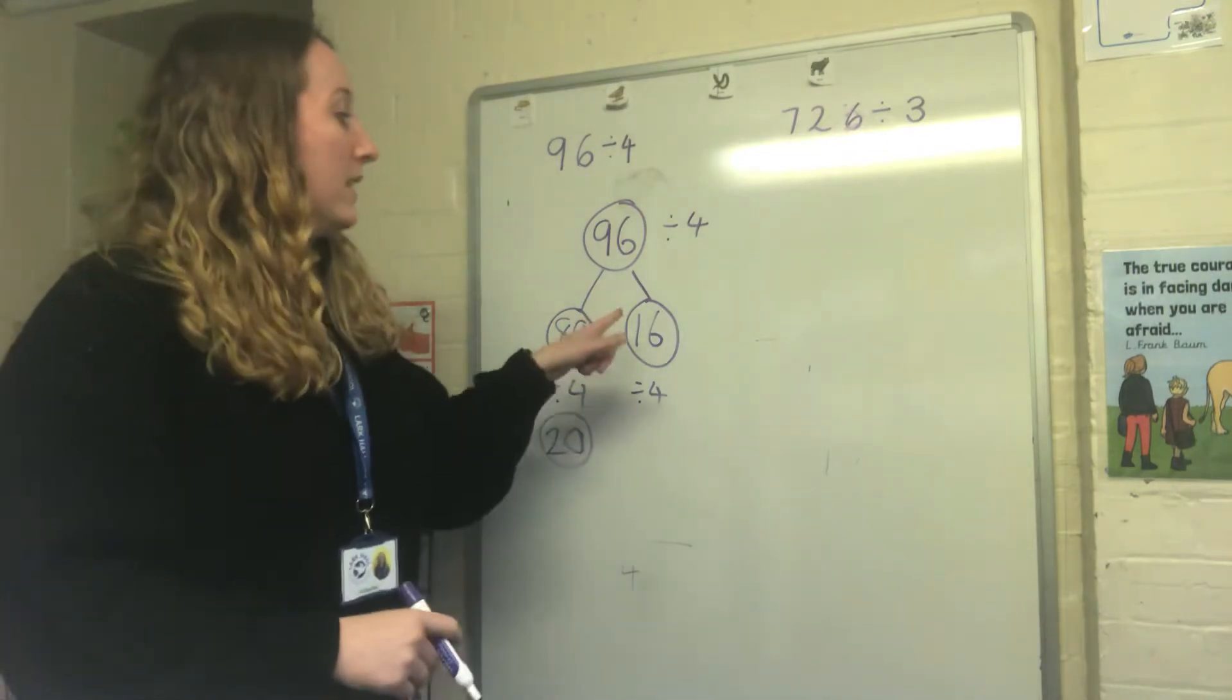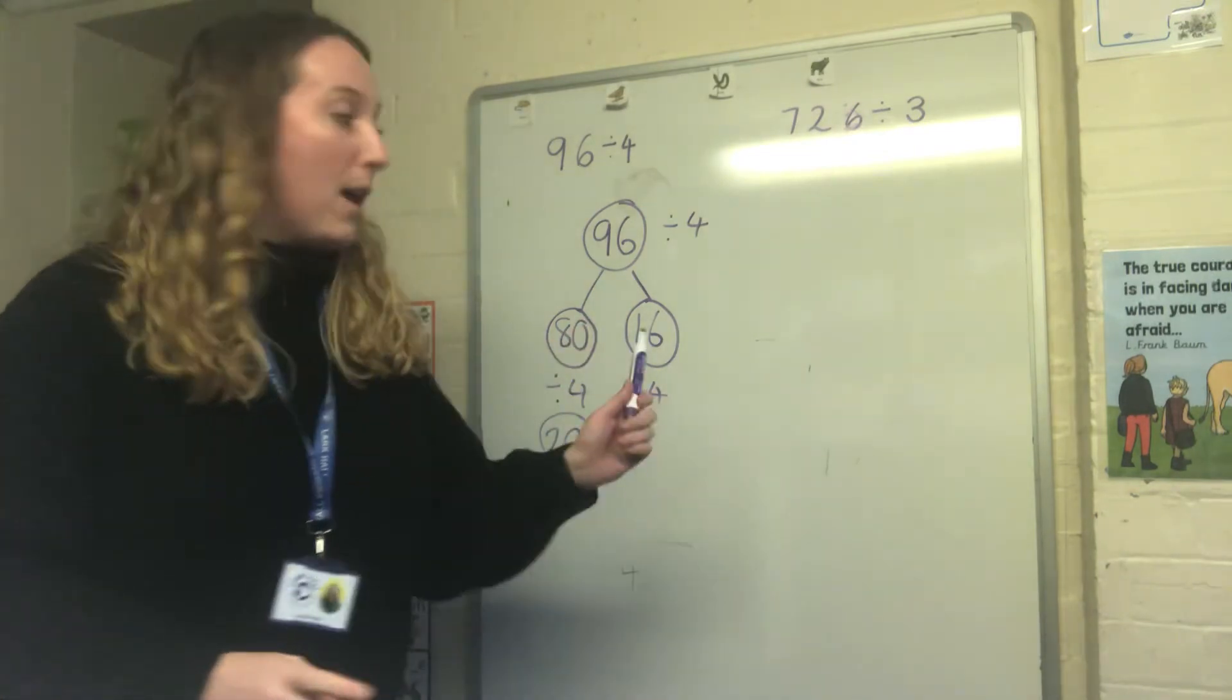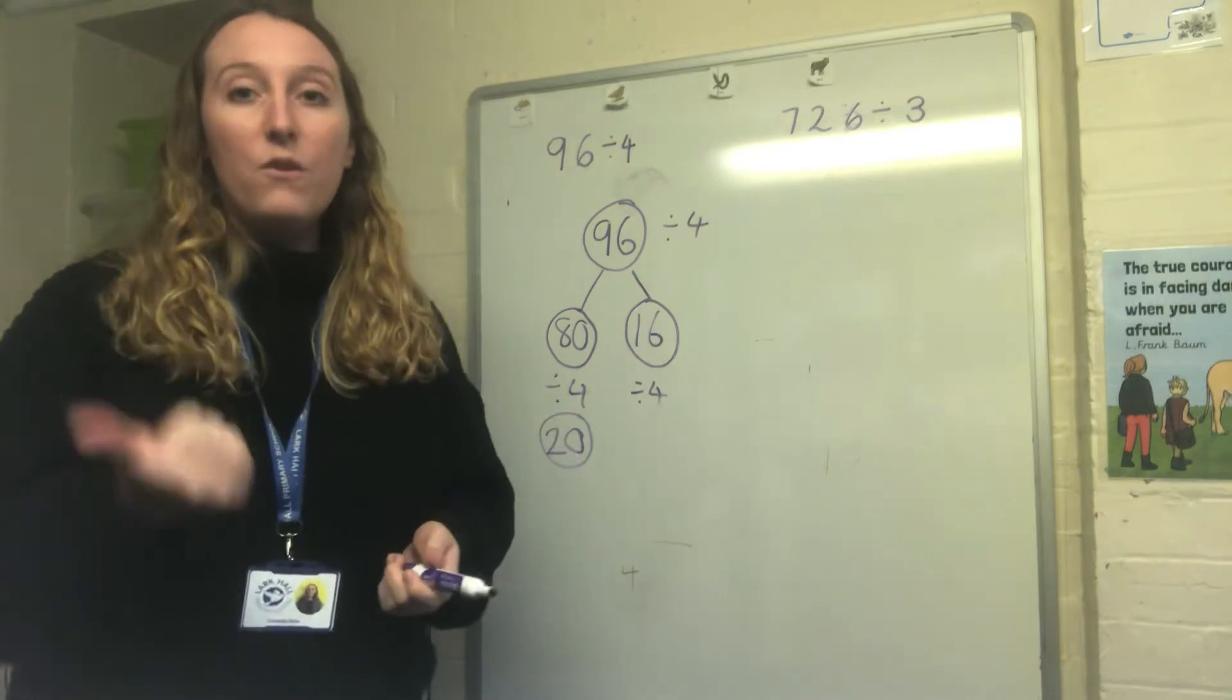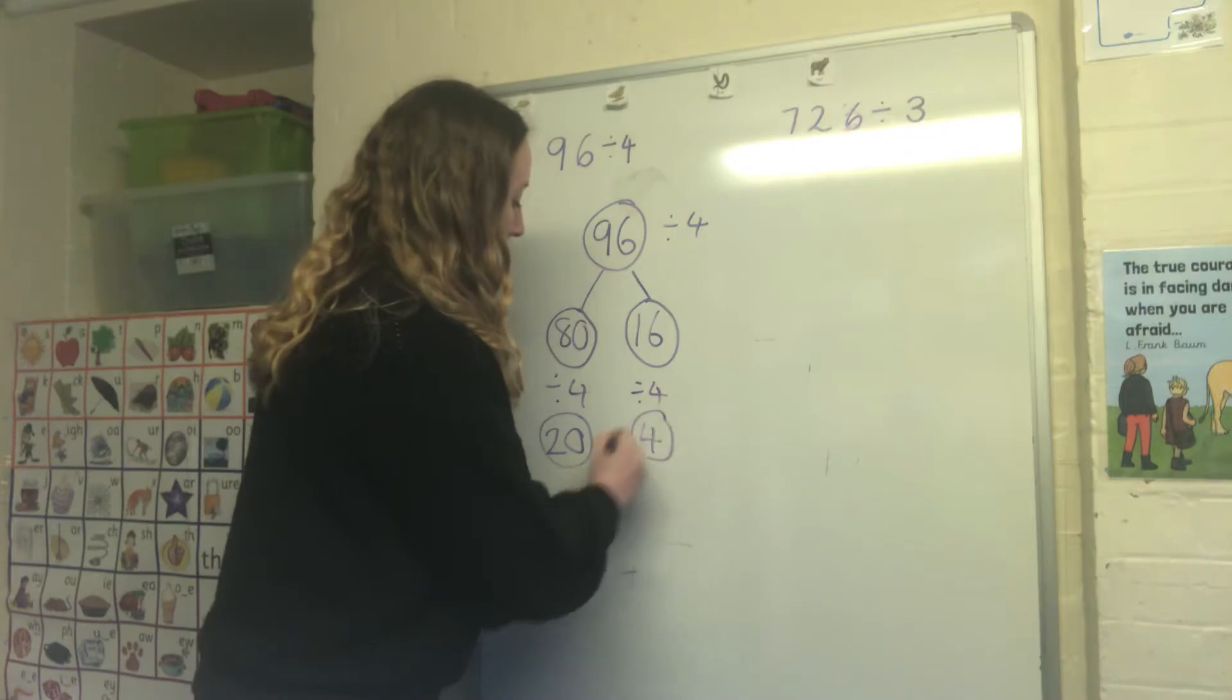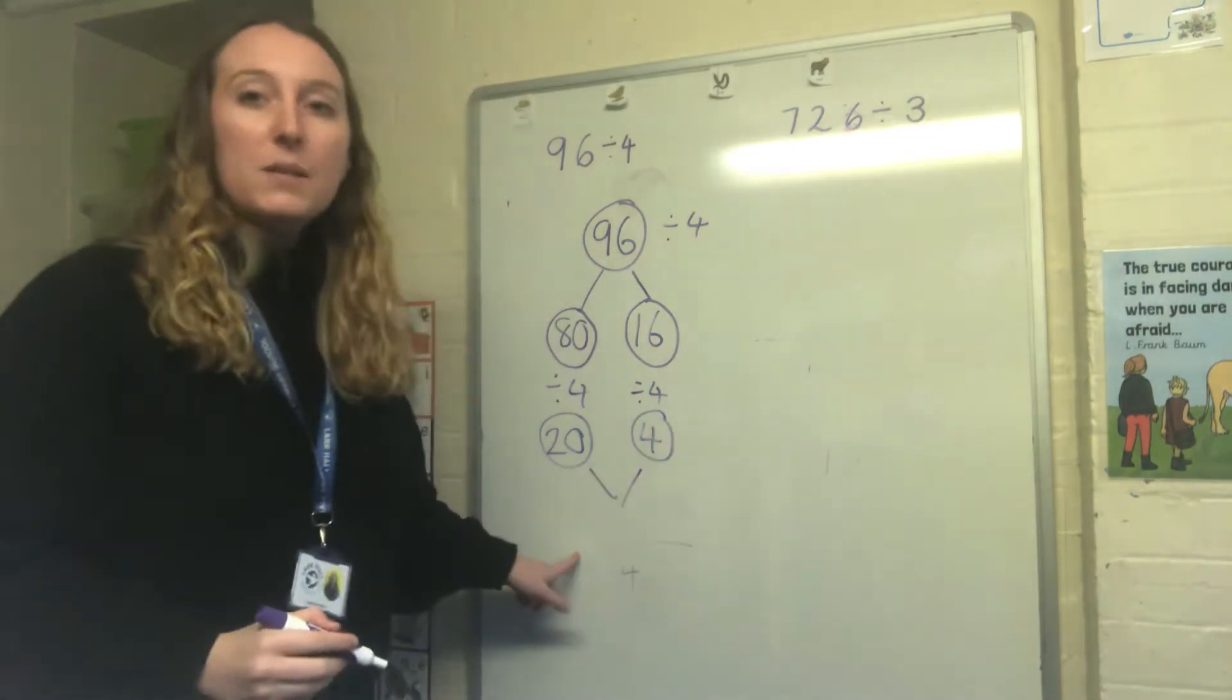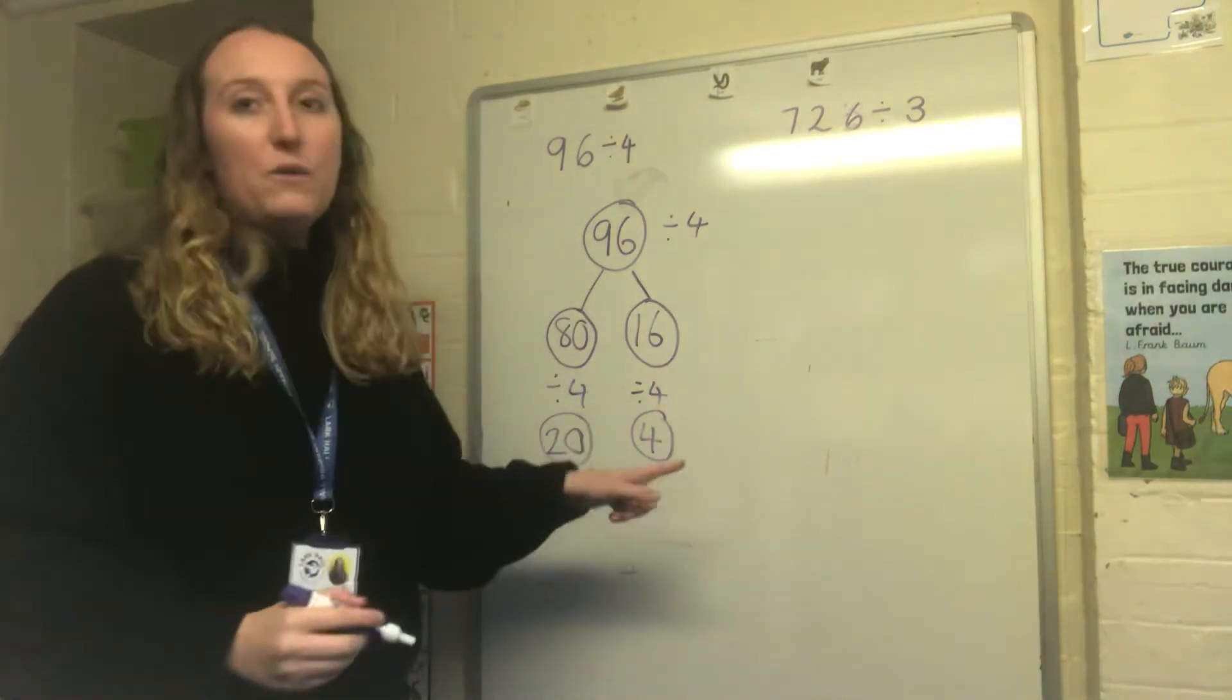Now I'm going to do 16 divided by 4. I'm going to count up in my 4s until I say 16. 4, 8, 12, 16. So that's 4. Now I need to put my two parts back together to get my answer. So 20 add 4 is 24.